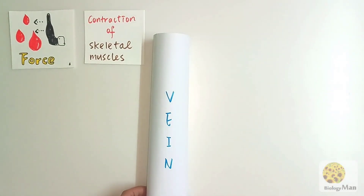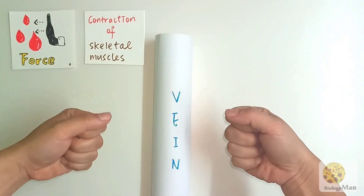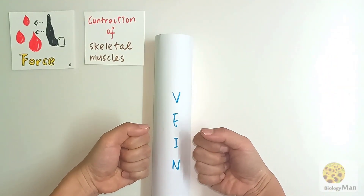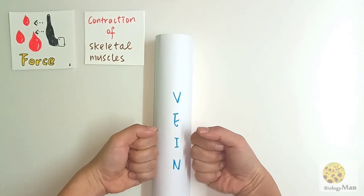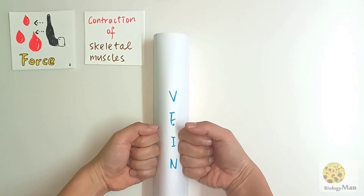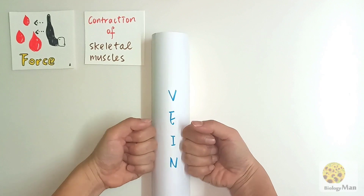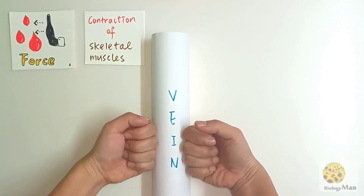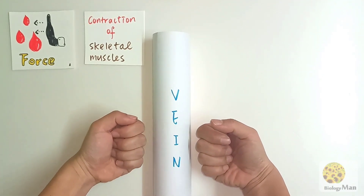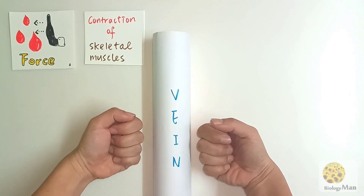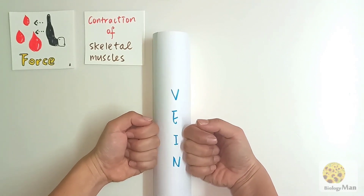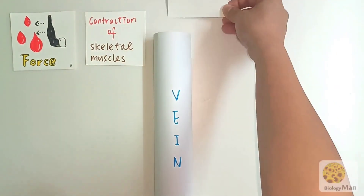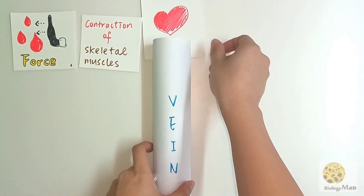This is a vein, and my hands represent the skeletal muscle. When the skeletal muscle contracts, it will squeeze the vein — just like this. Contract and contract. It is not the vein contracting, but the skeletal muscle adjacent to the vein contracting that squeezes and pushes the blood inside.